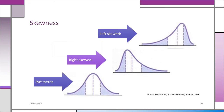Here is the graphical explanation. If something is left skewed, it's pulled to the left by extreme values. If a distribution is right skewed, it's pulled to the right — imagine an elastic band being pulled by some large data value. If it's symmetric, you don't see either effect, and the data is symmetric around the central location.